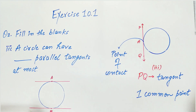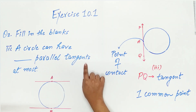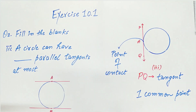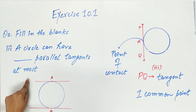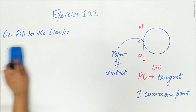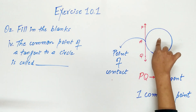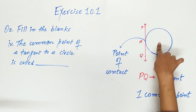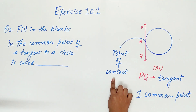Part 3 says: a circle can have how many parallel tangents at most? Parallel tangents are tangents which do not intersect each other. A circle can have at most only two parallel tangents — these two tangents will never meet. Part 4: the common point of a tangent to a circle is called the point of contact, hence point A is also known as the point of contact.